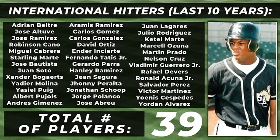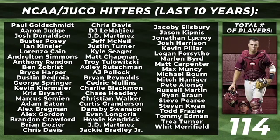Our final and largest subgroup are college and JUCO draftees. Paul Goldschmidt takes the number one spot on this list with six five-plus WAR seasons, with Aaron Judge and Josh Donaldson tying for second with five five-plus WAR seasons over the last 10 years.